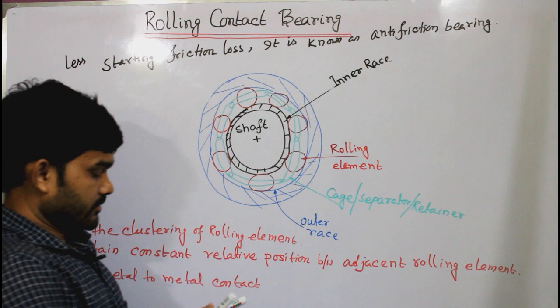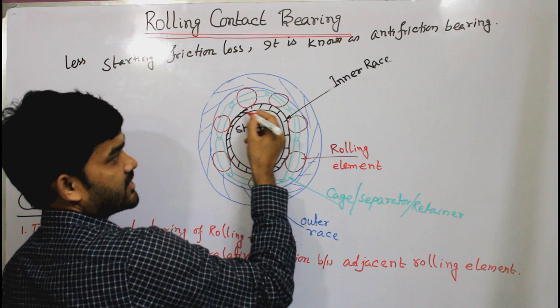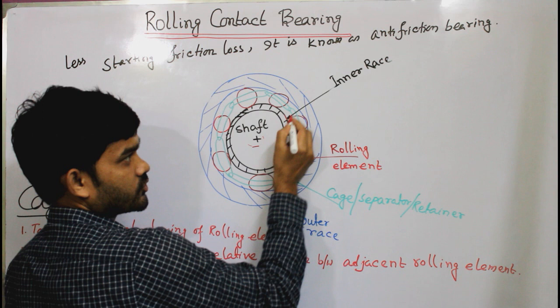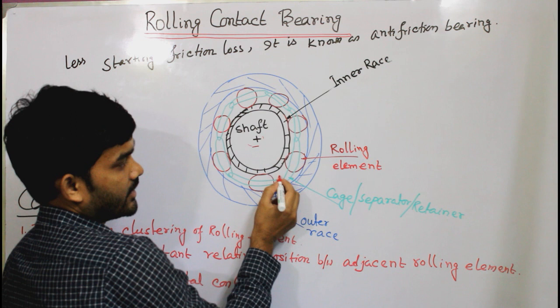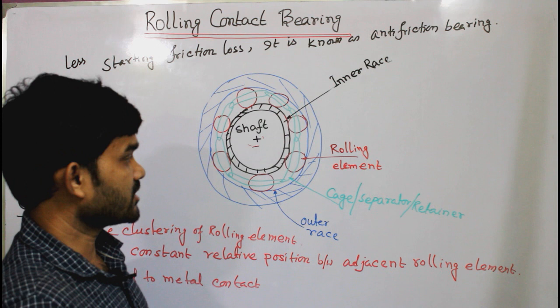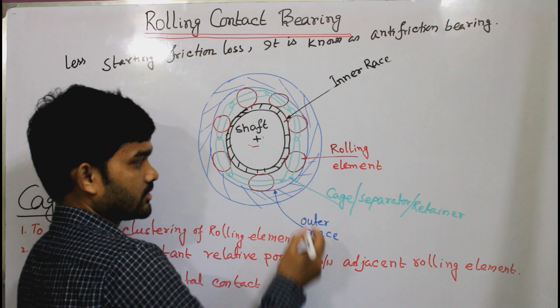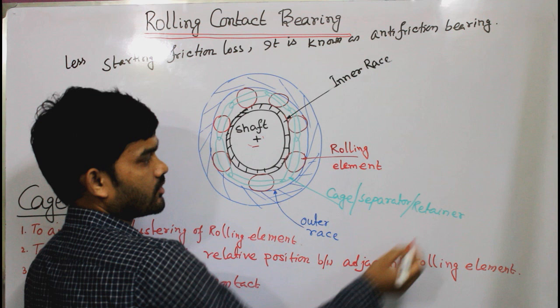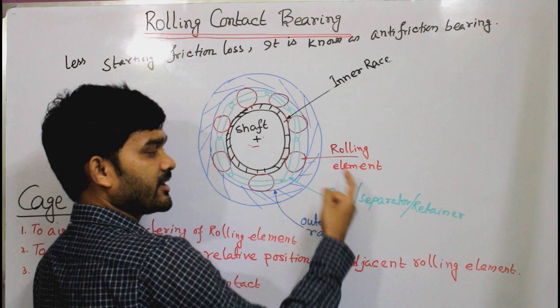Rolling contact bearings have four components. Looking at the arrangement: inside there is a shaft, around which is the inner race, and on the outside is the outer race. Then there is the rolling element — which may be a roller or a ball — and finally the cage, also called a separator or retainer.